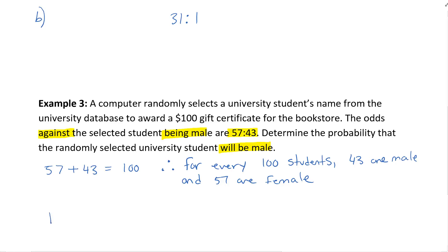What is the probability that the student will be male? That would be 43 out of 100. Because the odds against the selected student being male was 57 to 43, the 43 is the male and the 57 is the female.